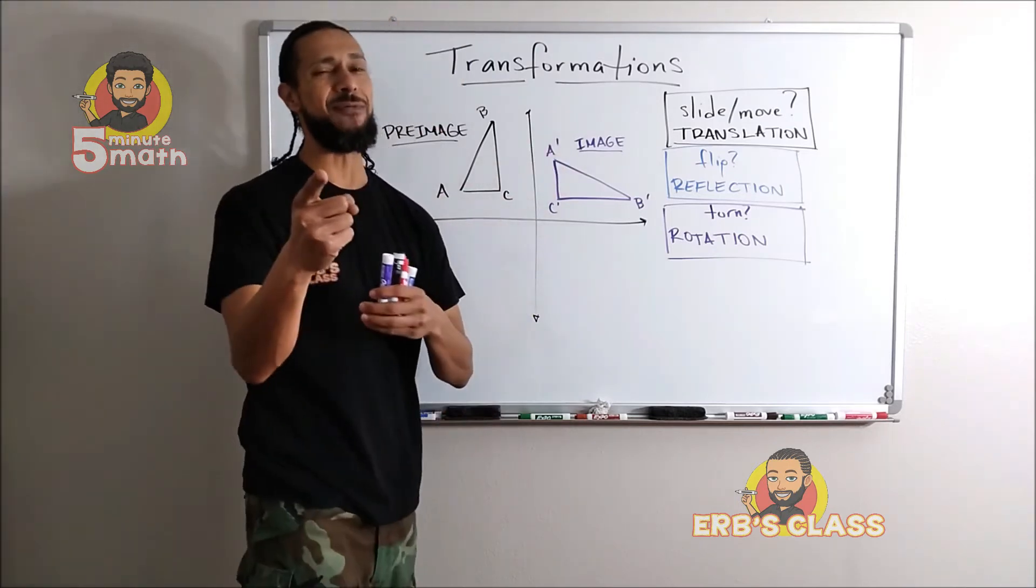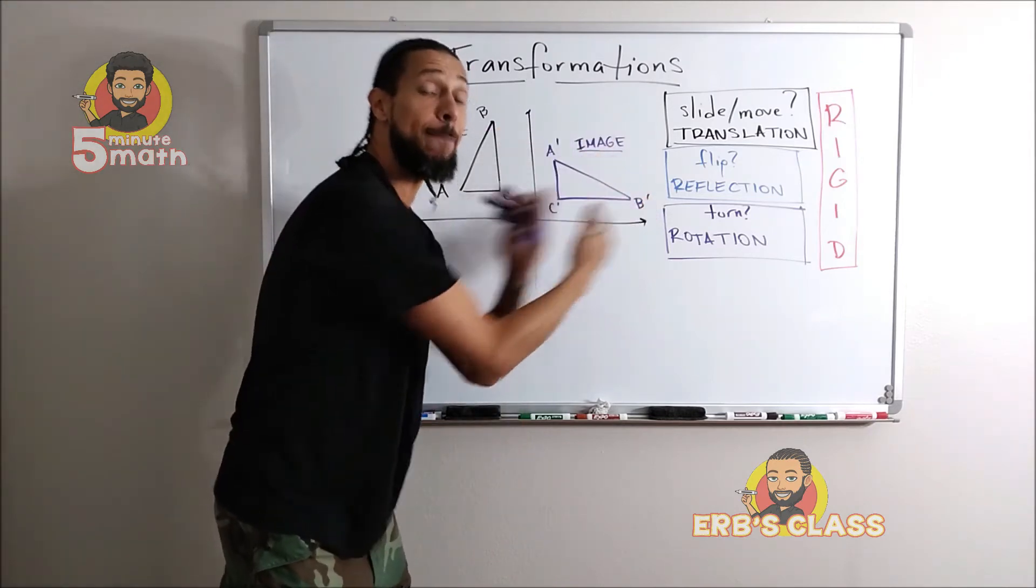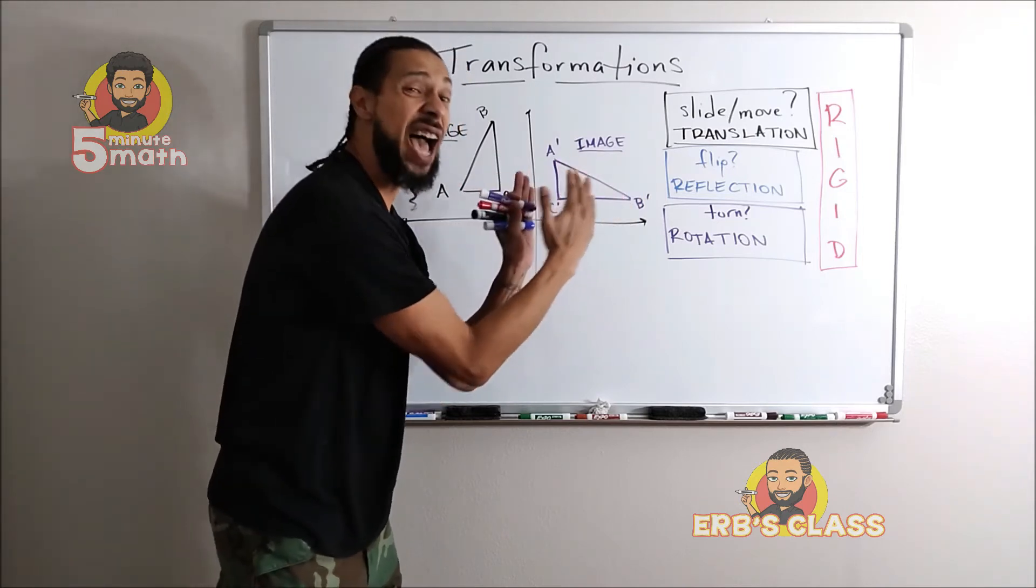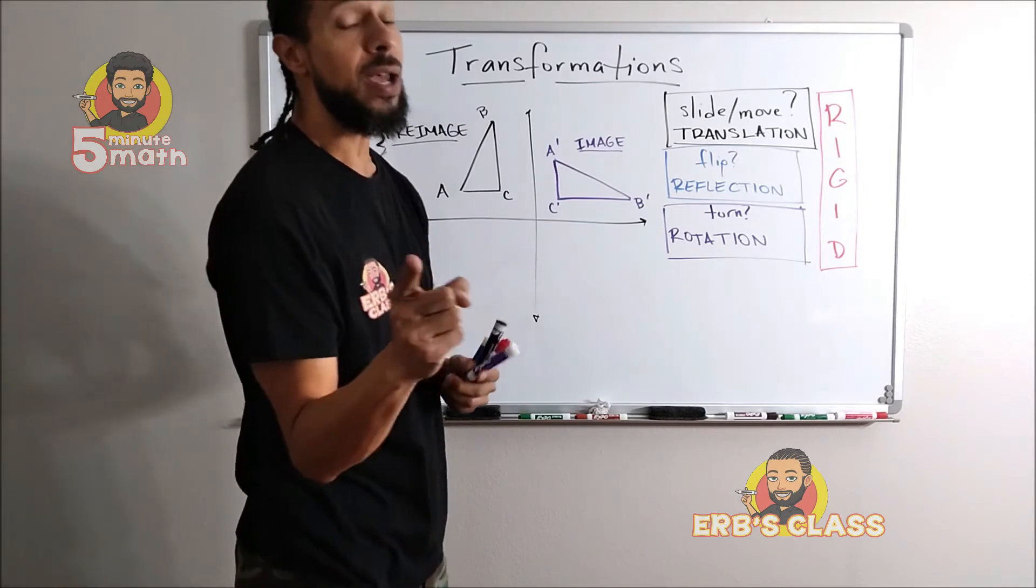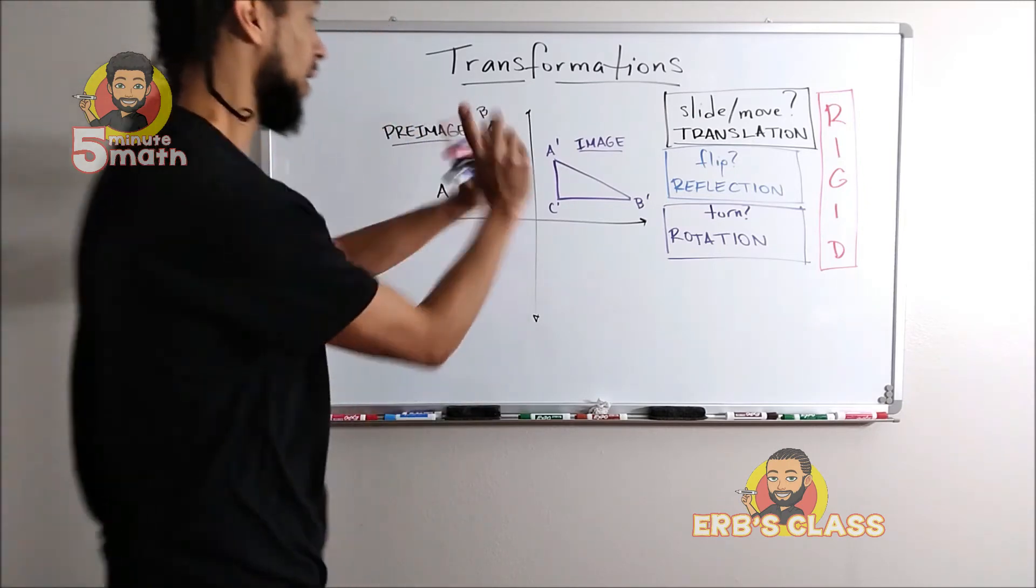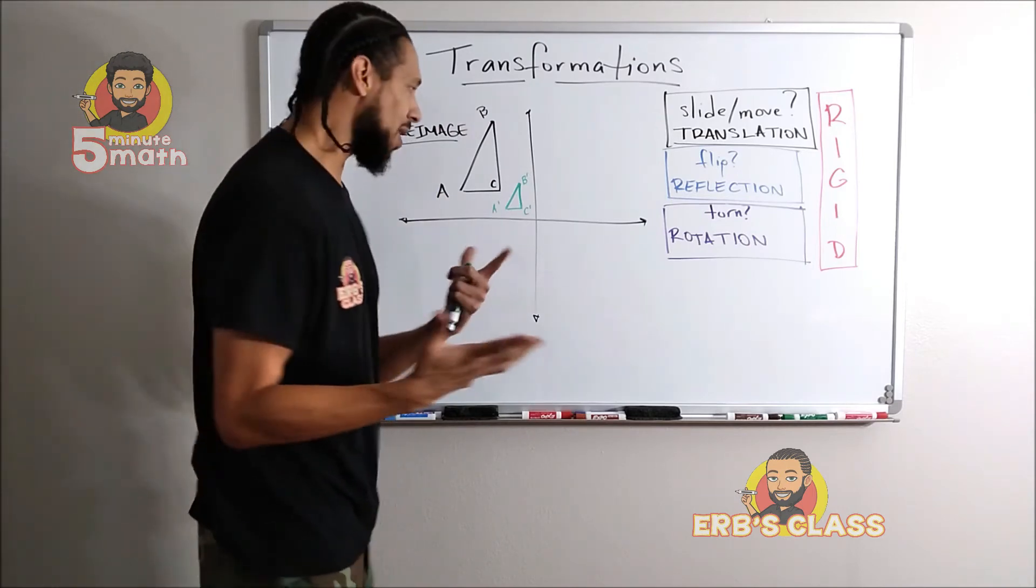Even if it was changed, it's still the same size. There's a special name for that: rigid. These are all rigid types of transformations. What that means, rigid means it doesn't change, the size does not change. Now there's one other way that we can make a change to a shape. Let's talk about that.